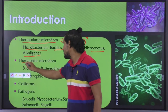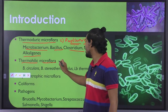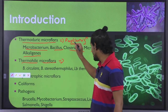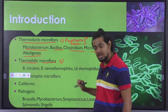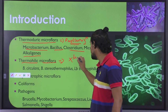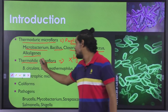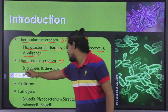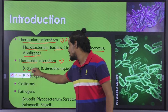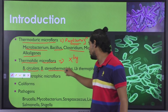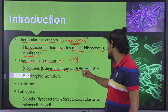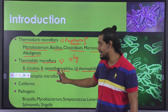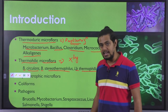Next we have thermophilic microflora, which are the category of microorganisms that can resist pasteurization temperature and also can multiply at the same temperature. Examples include bacillus circulans, bacillus stearothermophilus, and lactobacillus thermophilus. These are distinct varieties which can actually exist in case of milk.